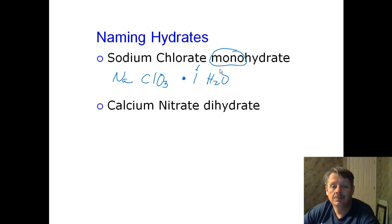Try that one. Calcium. Nitrate. And calcium has a two plus charge. And nitrate has a one minus charge. So I need to have two nitrates. And it has dihydrate. Di means two. So it has two waters.